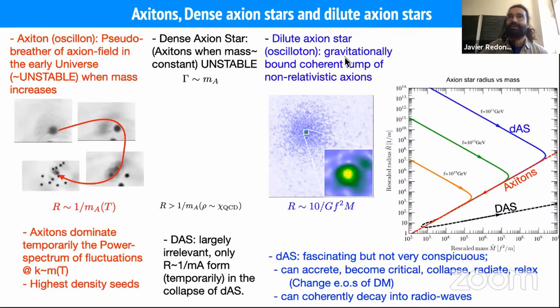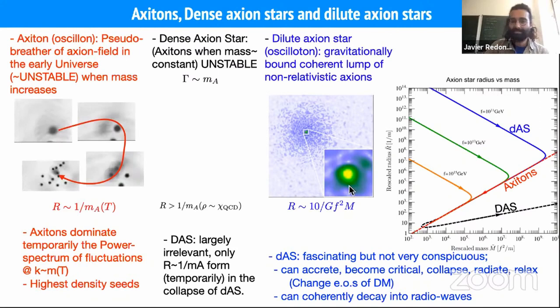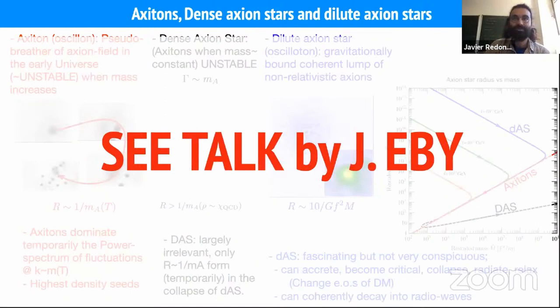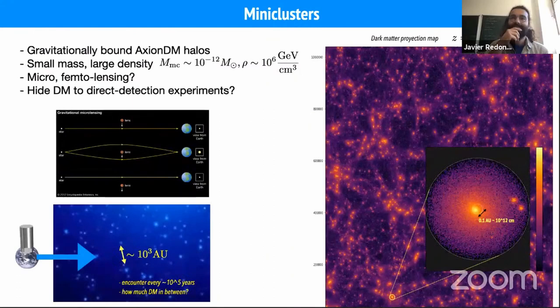Dilute axion stars have nothing to do with sine-Gordon or axion self-interactions. They are only bound by gravity, and we have already heard a lot about them from Jens. They can appear very nicely in the centers of mini-clusters. Much more on this will be described by Joshua in this afternoon's talk.